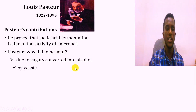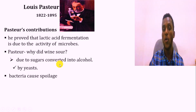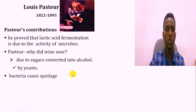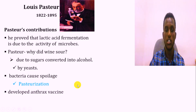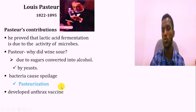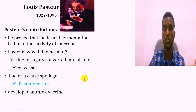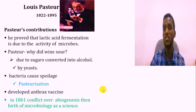The microorganism responsible is yeast, or Saccharomyces cerevisiae. Microorganisms not only produce fermented food products but can also spoil food. Pasteur provided a solution using the pasteurization technique to kill microorganisms and control spoilage. He also developed vaccines for anthrax. This era is considered the golden age of microbiology, and Pasteur is known as the father of modern microbiology.